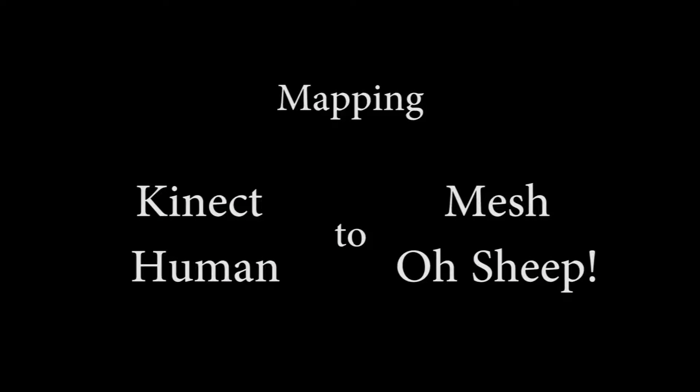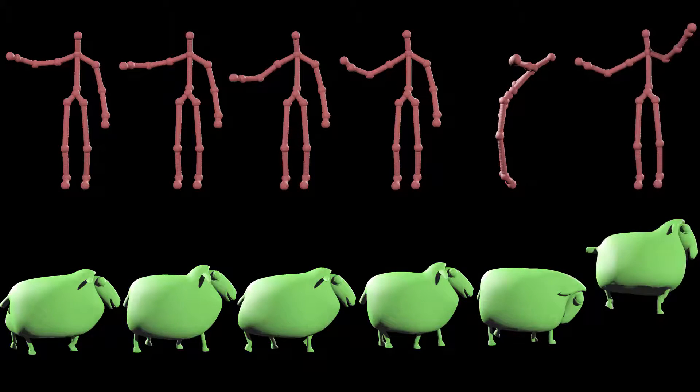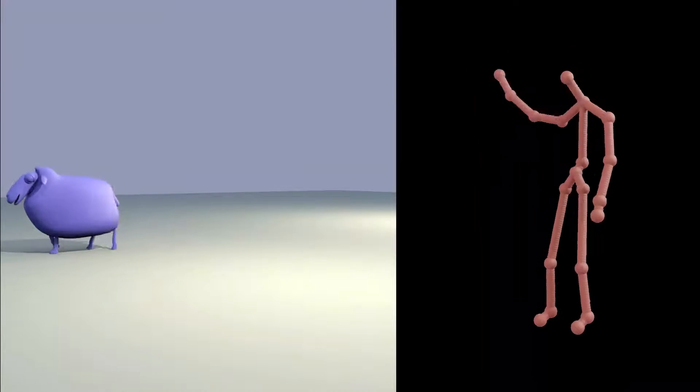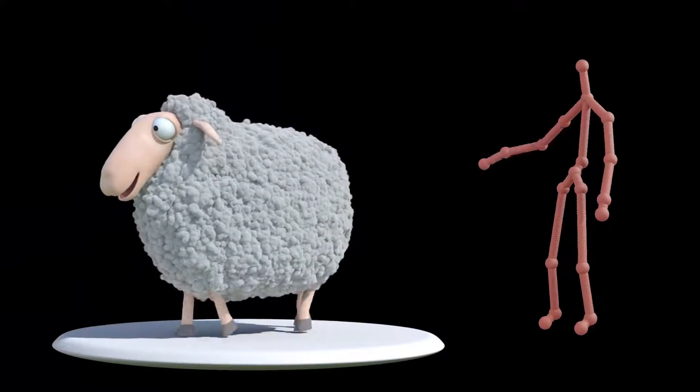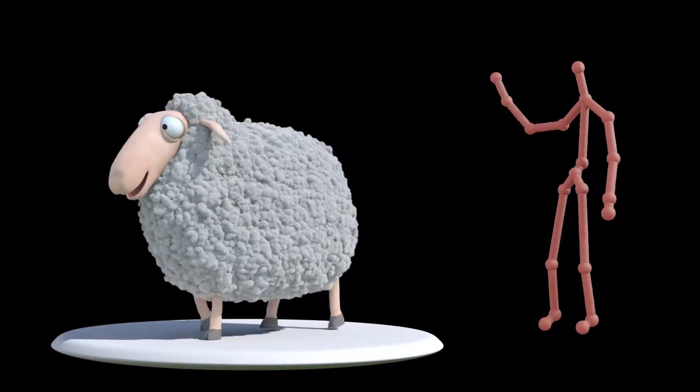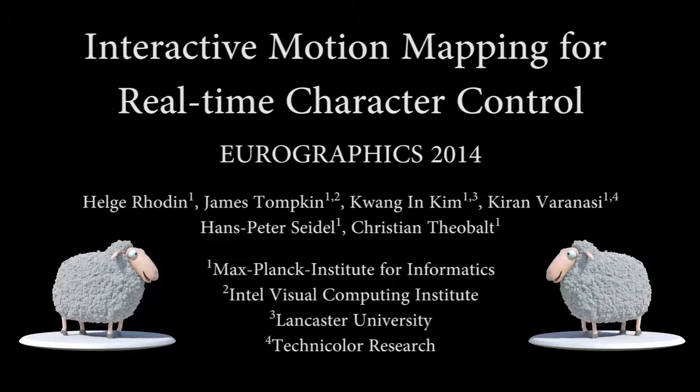Finally, we puppet the sheep with body motions. Bending of the torso forward reflects in the sheep's motion, making it easier to create an expressive jumping animation. In conclusion, our method supports interactive motion mapping with few correspondences for real-time character control of arbitrary shapes and motions, and, in doing so, provides new ways to control characters for real-time animation.